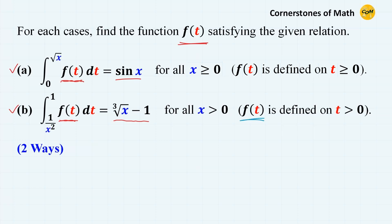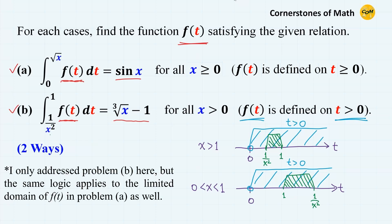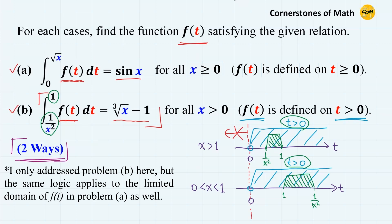For the second problem, f(t) is defined on t greater than 0, because the interval of this definite integral can only cover the region where t is greater than 0. So this integral condition cannot give any information about f(t) where t is negative. I will show you two very similar yet not quite the same methods — they both rely on the same fundamental theorem.